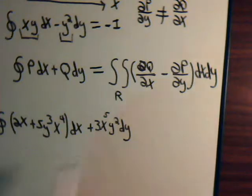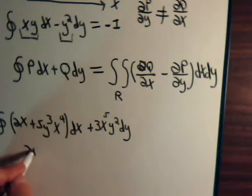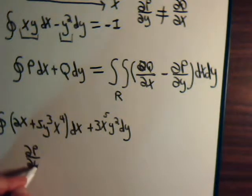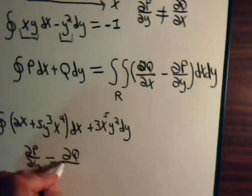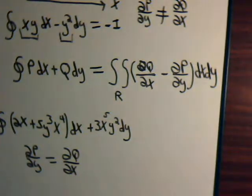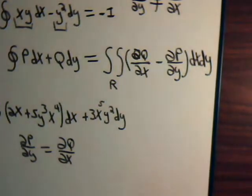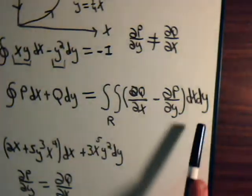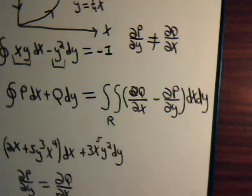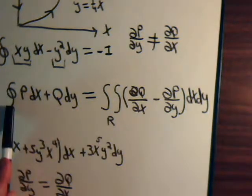So that means that here, the partial of P with respect to Y, we've discovered that indeed, that did equal the partial of Q with respect to X. Well, let's go back to Green's theorem then. That means that these are equal, therefore, this is zero. Therefore, this is zero.